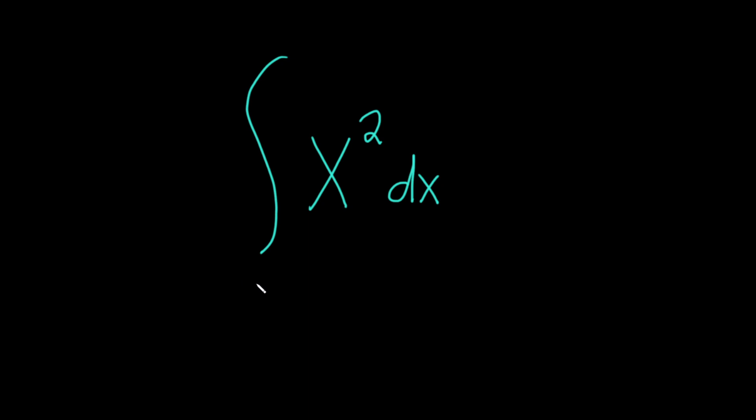The formula says if you have the integral of x to the n with respect to x, this is equal to x to the n plus 1 divided by n plus 1 plus c where c is our constant of integration. And all of this n cannot be equal to negative 1.